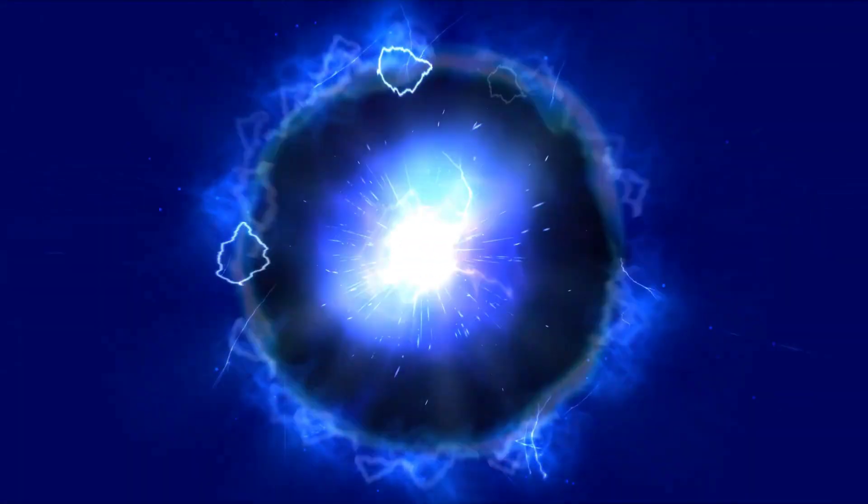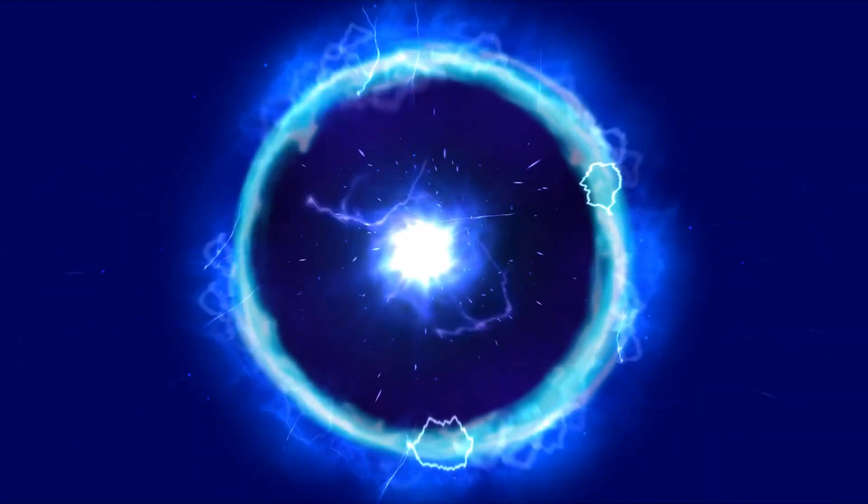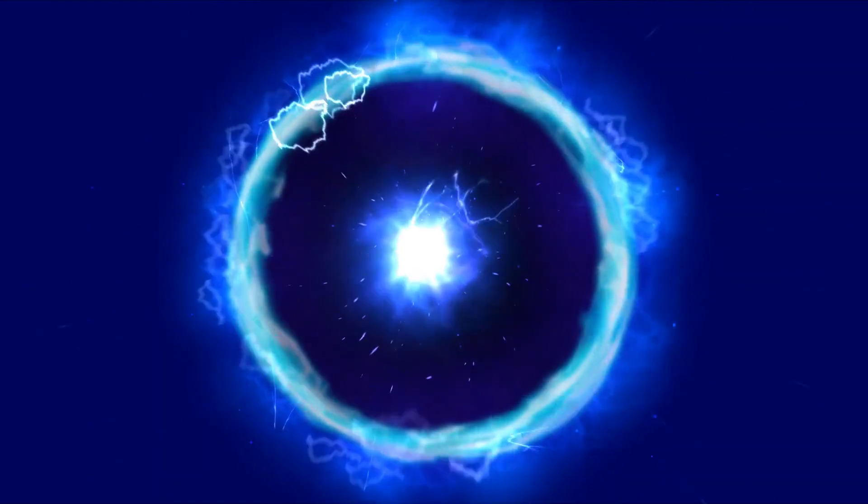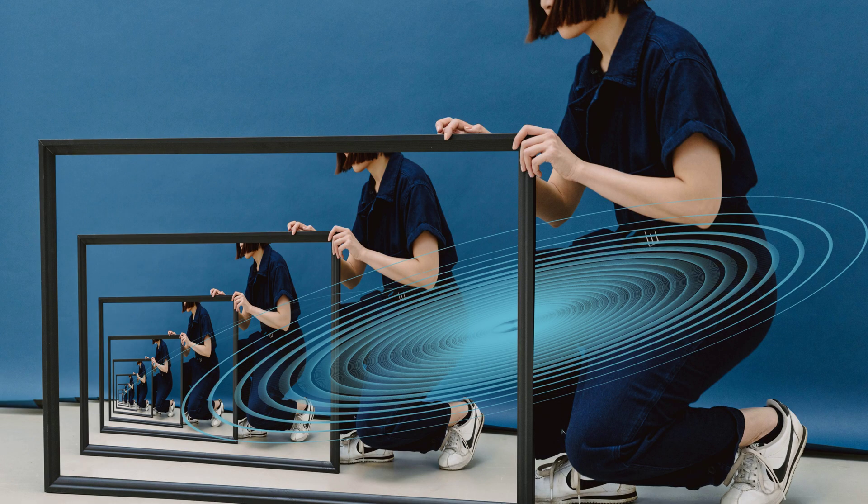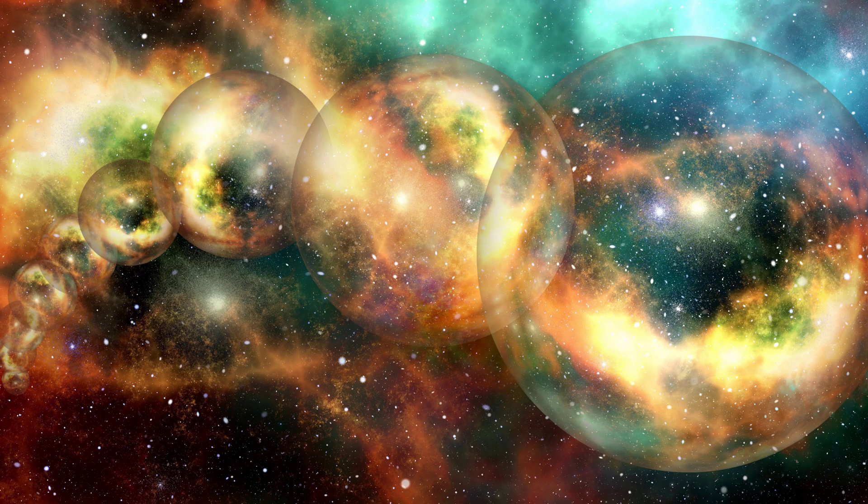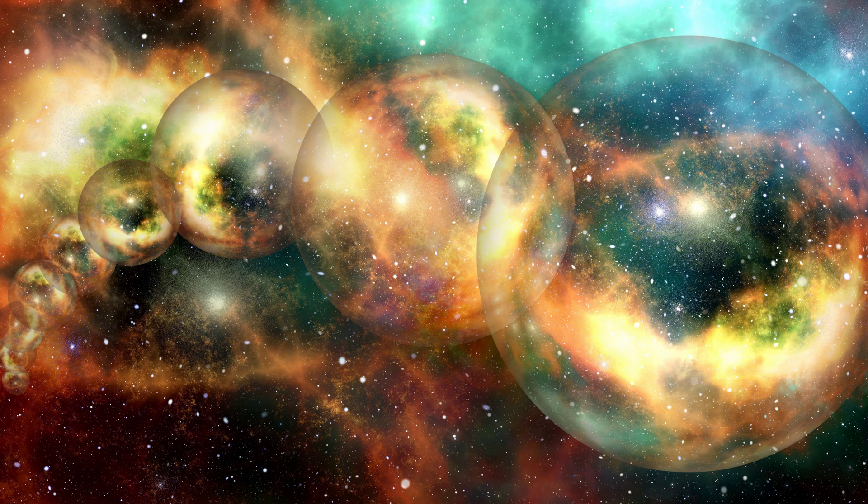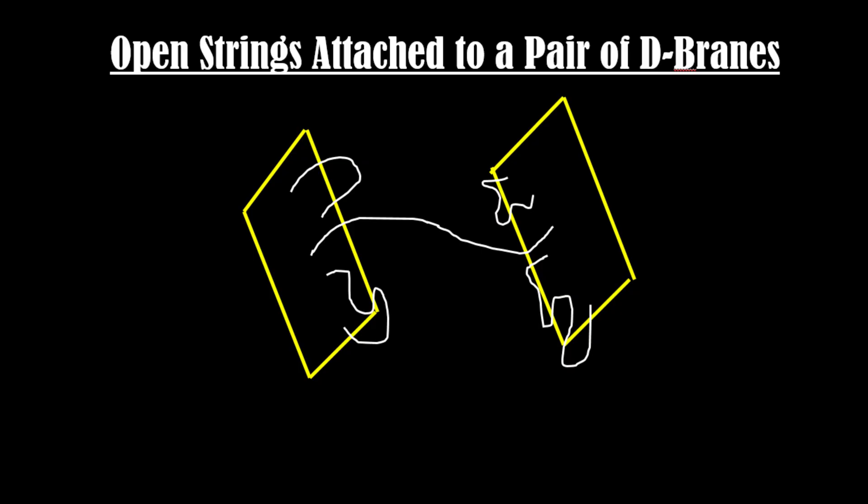The 11th dimension is sometimes referred to as the brane world or the bulk. In this dimension, all possible universes and outcomes exist simultaneously. It is like a massive landscape of all the possible ways the universe could be, each one represented by a different brane or membrane within the 11th dimension.